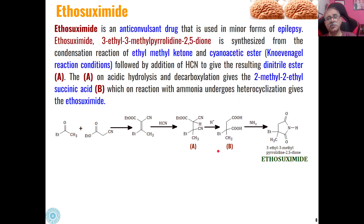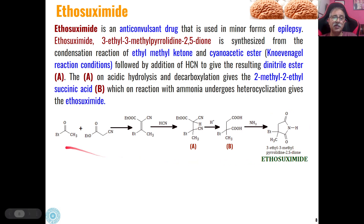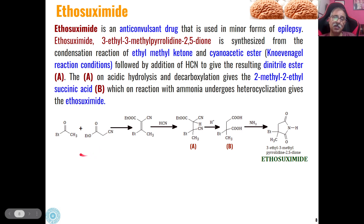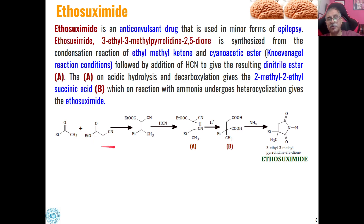Then is Ethosuximide, an anticonvulsant drug used in the minor forms of epilepsy. This is basically a pyrrolidine-2,5-dione derivative synthesized from simple organic condensation reactions. In the first step, ethyl methyl ketone reacts with cyanoacetic ester through Knoevenagel reaction conditions — a condensation reaction because of the active methylene hydrogens which are acidic. A carbanion is generated and attacks the electrophilic carbon, and two hydrogens with a water molecule are removed through the condensation reaction giving carbon-carbon double bond formation.